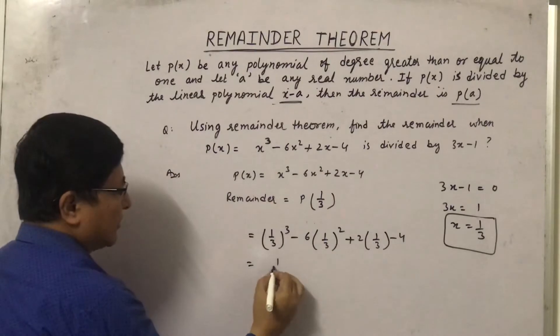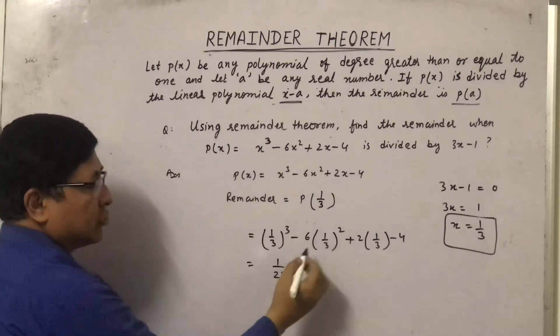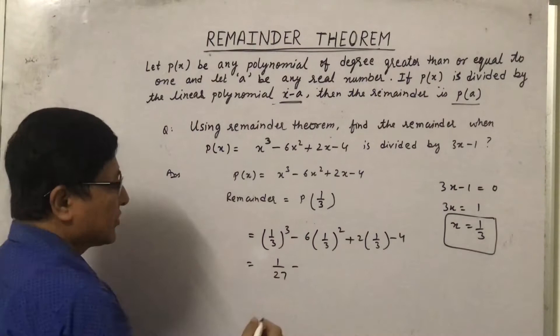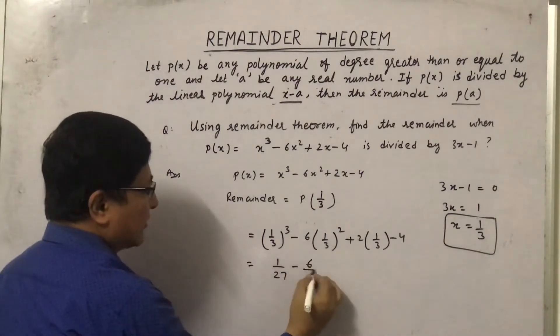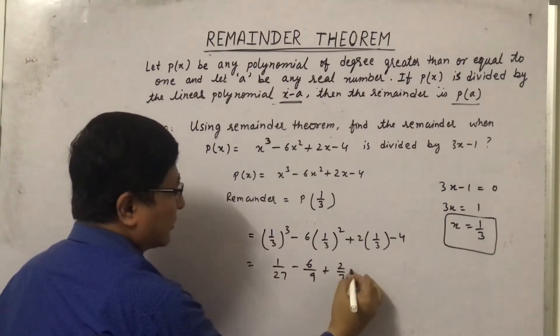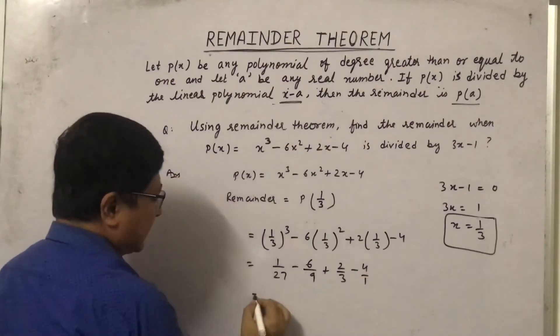Now let us solve this. This will become 1/27. 1³ is 1/27, and 1/3 squared is 1/9, so it becomes 6/9 + 2/3 - 4.